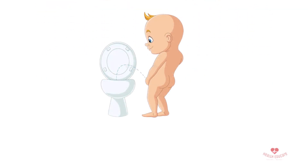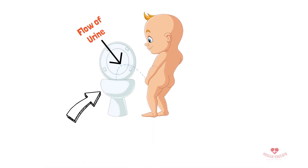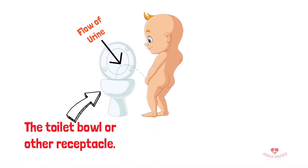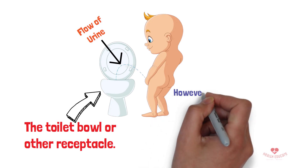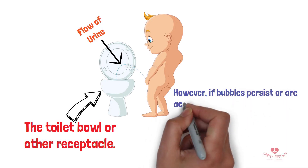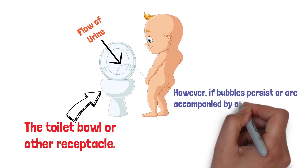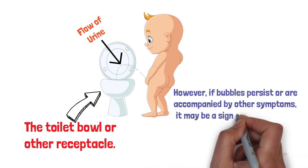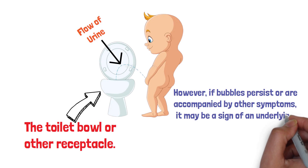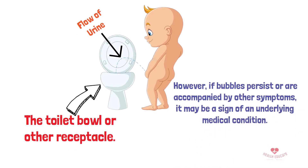In many cases, the presence of bubbles in urine is simply due to the flow of urine and the way it interacts with the toilet bowl or other receptacle. This is especially true if the bubbles only appear occasionally and are not accompanied by any other symptoms. However, if bubbles persist or are accompanied by other symptoms, it may be a sign of an underlying medical condition.